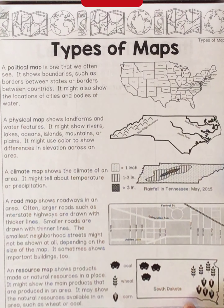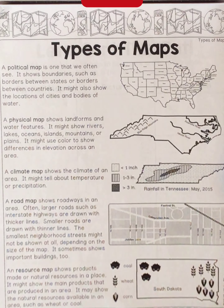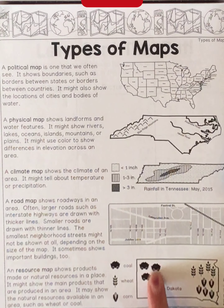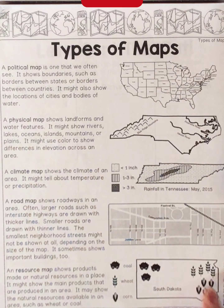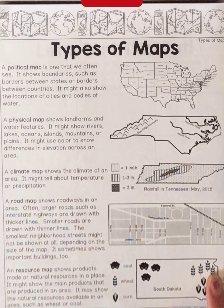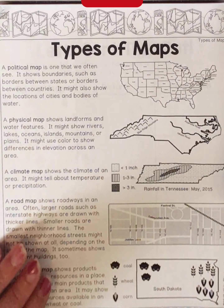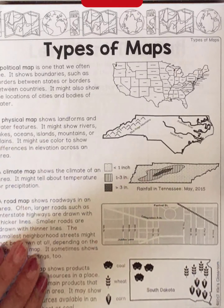Last is a resource map, something you've probably seen in your social studies textbook. It shows the products made or natural resources found in a place, including the main products produced in an area. It usually has a key — for example, in South Dakota, northwest is where they mine coal, while the eastern part of the state is known for wheat and corn.